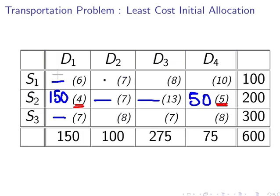The next lowest shipping cost is 7, but there are 2 with 7. Now, we could ship 100 from S1 to D2. S1 has 100 to ship, D2 will accept 100. Or, we could look at the S3 to D3. There we can ship 275. So, in a tiebreaker situation like this, you pick the one where you can ship the largest number. In this case, it is 275. So, we are going to pick S3 to D3.